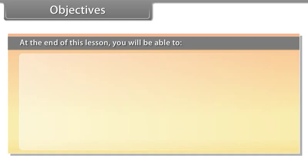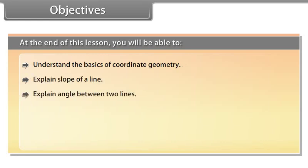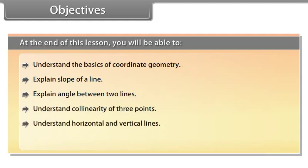Objectives: At the end of this lesson, you will be able to understand the basics of coordinate geometry, explain slope of a line, explain angle between two lines, understand collinearity of three points, understand horizontal and vertical lines, and write point-slope form and two-point form.